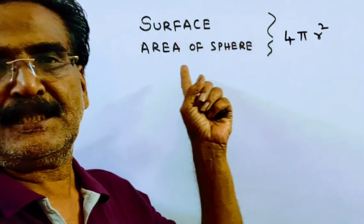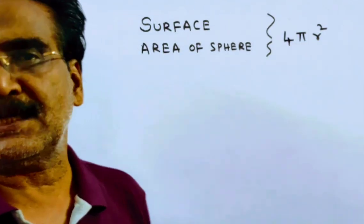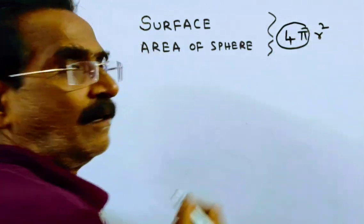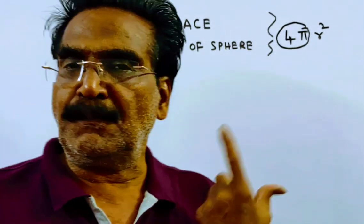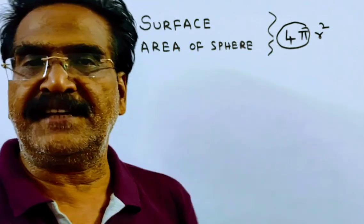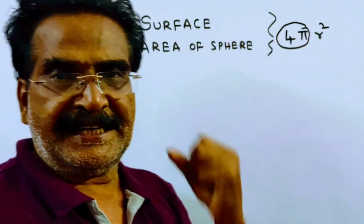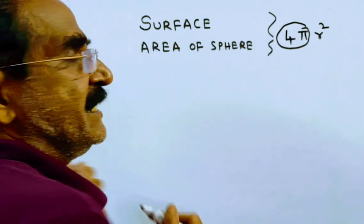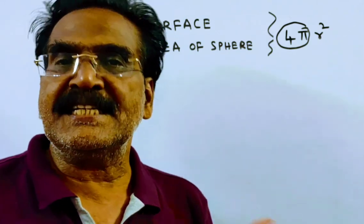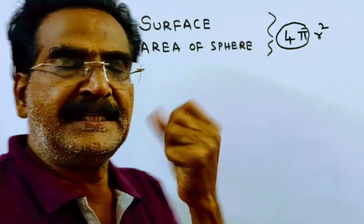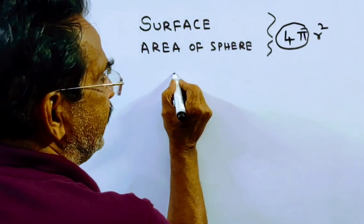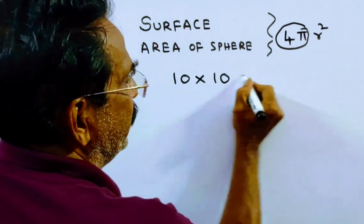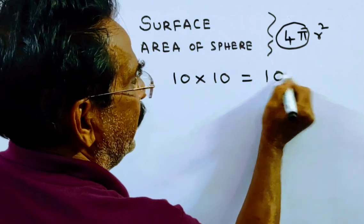The surface area of a sphere is 4πr², where 4π is constant and the only variable is r². So say the original radius of the sphere is 10 cm. Then the area is 10 × 10, that is equal to 100.